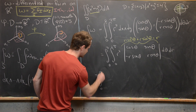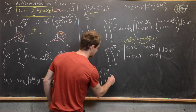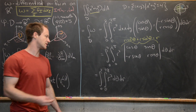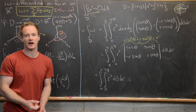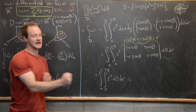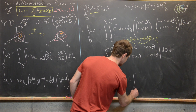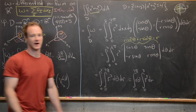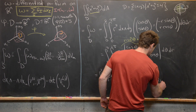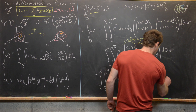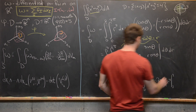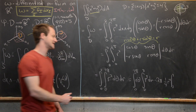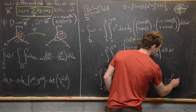We now have the double integral from 0 to 2 and 0 to 2π of r³ dθ dr. Since the integrand is a function of r times a constant function of θ, we can separate it: the integral from 0 to 2π dθ times the integral from 0 to 2 of r³ dr. This gives 2π times [r⁴/4] from 0 to 2 = 2π times 16/4 = 2π times 4 = 8π.